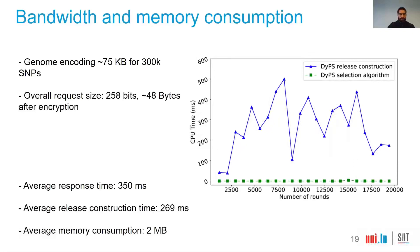Regarding bandwidth, we encode genomes and SNPs with two bits to represent each SNP, giving a total of 75 kilobytes for a 300K SNPs study. The overall request size is 258 bits — approximately 48 bytes after encryption — resulting in short response and release construction times. An important result is that the average memory consumption is only two megabytes, which is within the memory limitations of SGX.